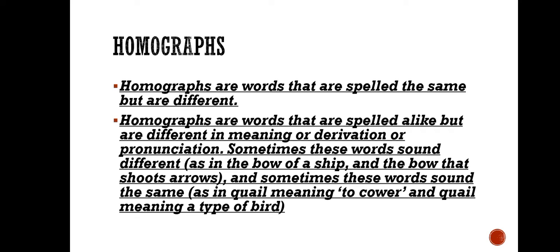Homographs are words that are spelled alike but are different in meanings or derivation or pronunciation. Sometimes these words sound different as in the bow of a ship and bow that shoot arrows or a bow of your head. And sometimes these words sound the same as in quail meaning to cover and quail meaning a type of bird. Same spelling but different meanings.